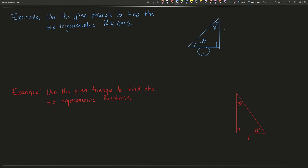We don't have our hypotenuse, so that's the first thing we should find. In this diagram, one leg is the opposite side and the bottom one is the adjacent side. To find the hypotenuse: 1 squared plus 1 squared equals the hypotenuse squared, which gives us 2. So our hypotenuse is the square root of 2.